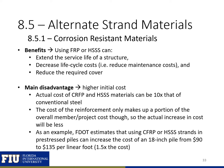Some benefits of using corrosion-resistant materials include extended service life, decreased life cycle costs (reduced maintenance), and reduced required concrete cover for more efficient use of reinforcement. The main disadvantage is the higher initial cost — CFRP and stainless steel materials can cost up to 10 times that of conventional steel. However, since reinforcement makes up a small portion of overall project cost, in FDOT pre-stressed piles for example, it only increases total cost by about one and a half times.